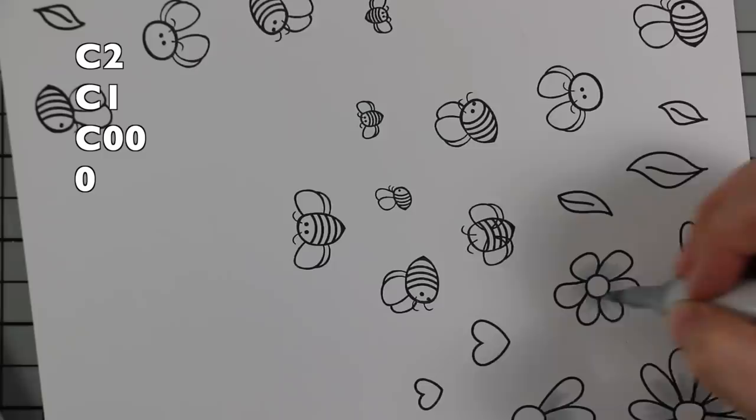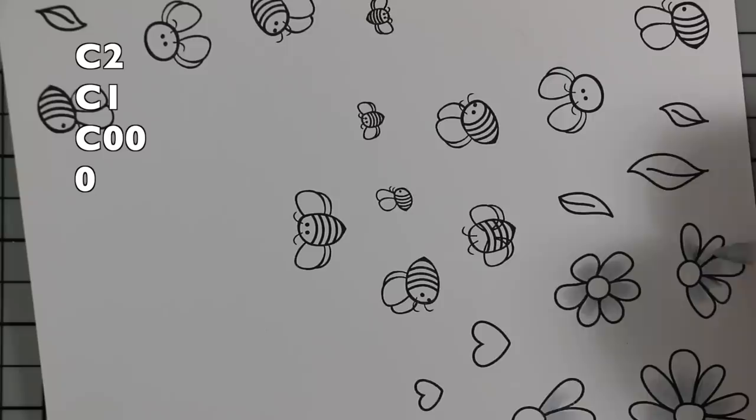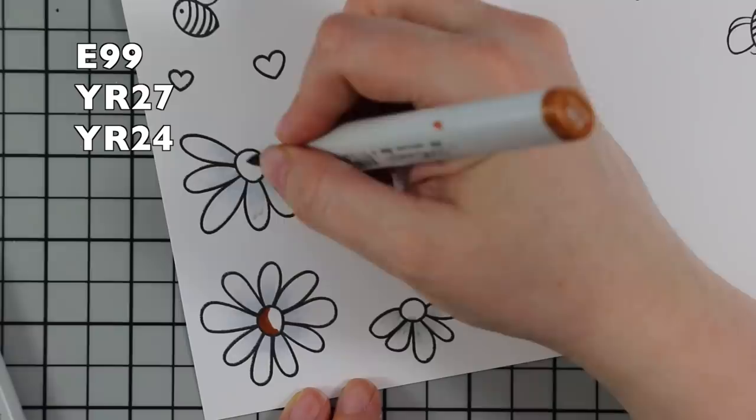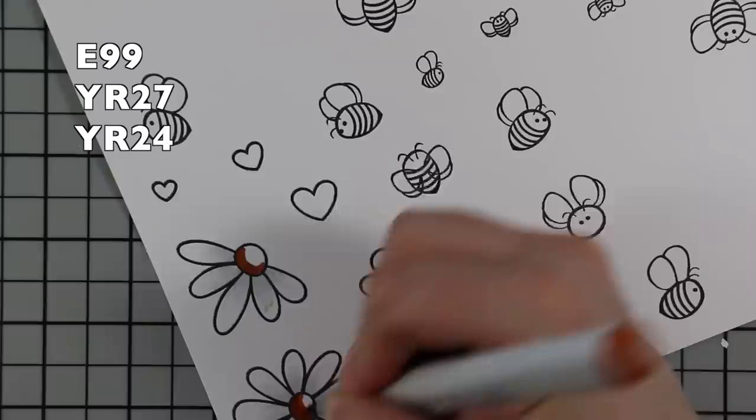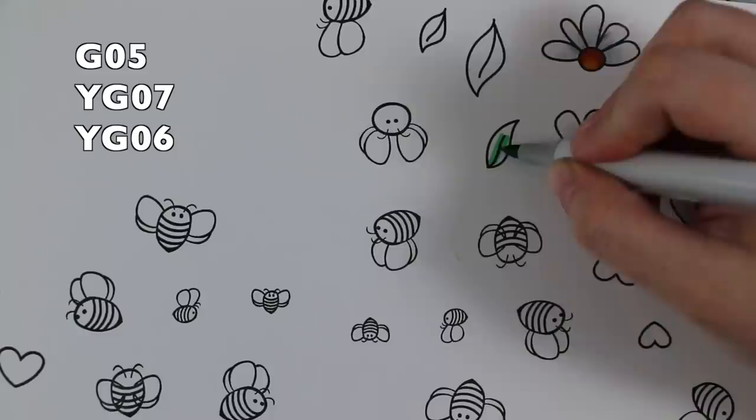Off camera, I ended up taking my colorless blender just to lighten it all a little bit and blend that. After I did all the cool grays for the flowers, I'm going to work on the flower centers. I went with colors inspired by the Vintage Photo and the dark honey color from the beehives: E99 as my first color, then YR27, then YR24. Darkest to lightest, and then it's all blended. The leaves were G05, YG07, and YG06.